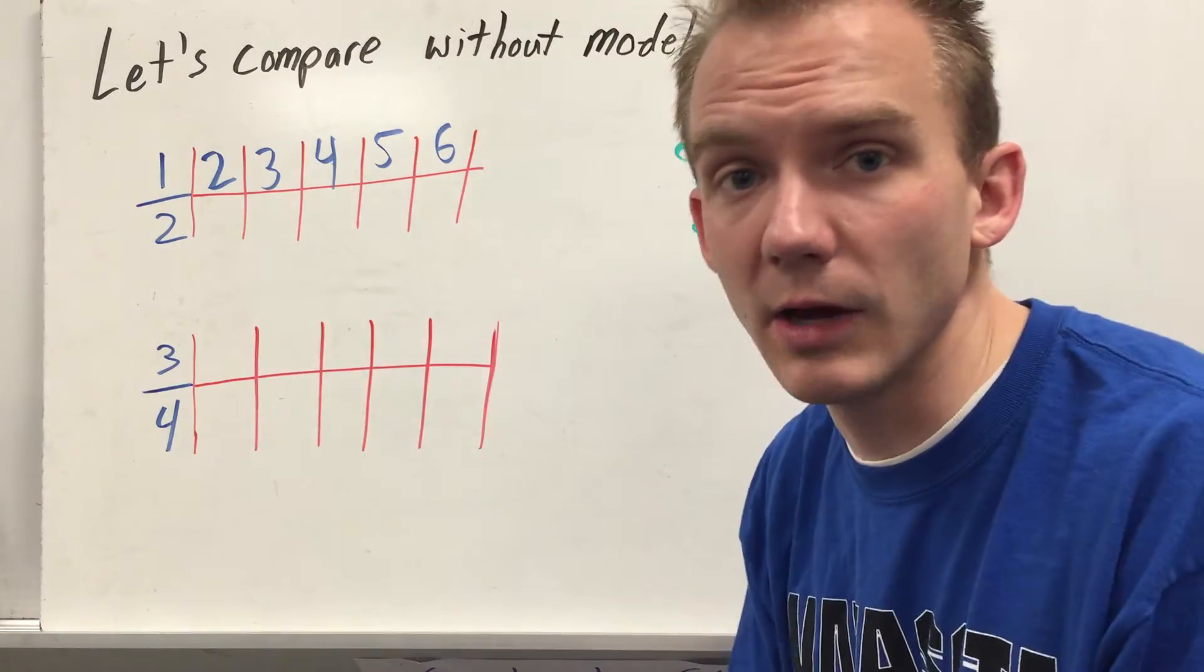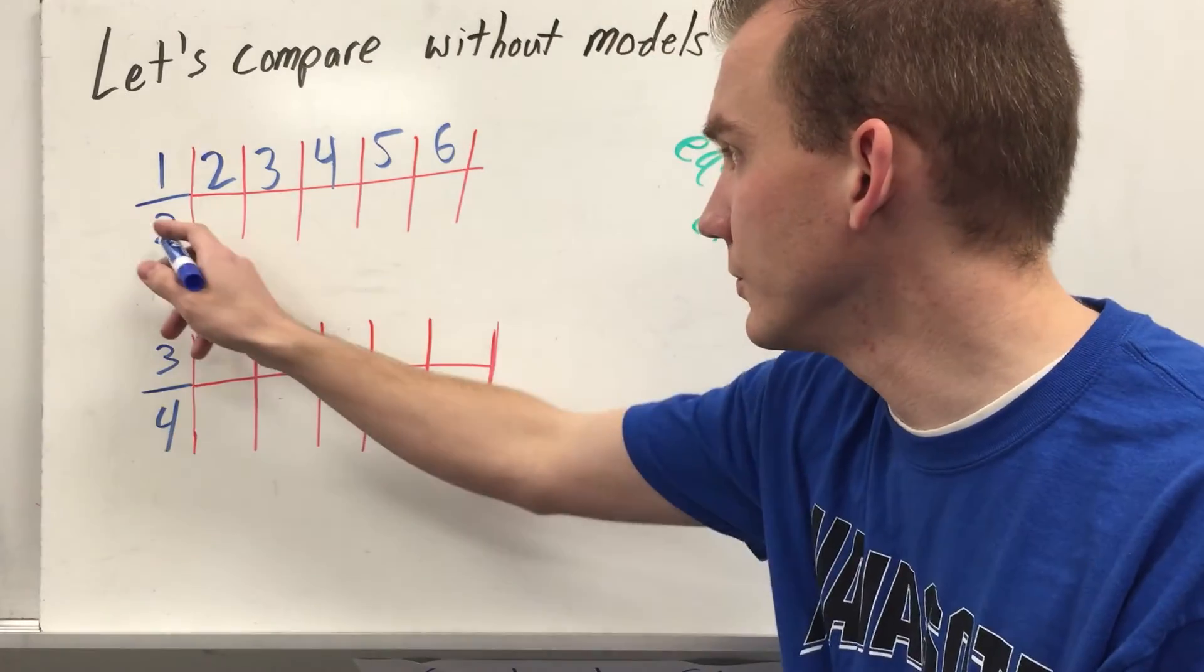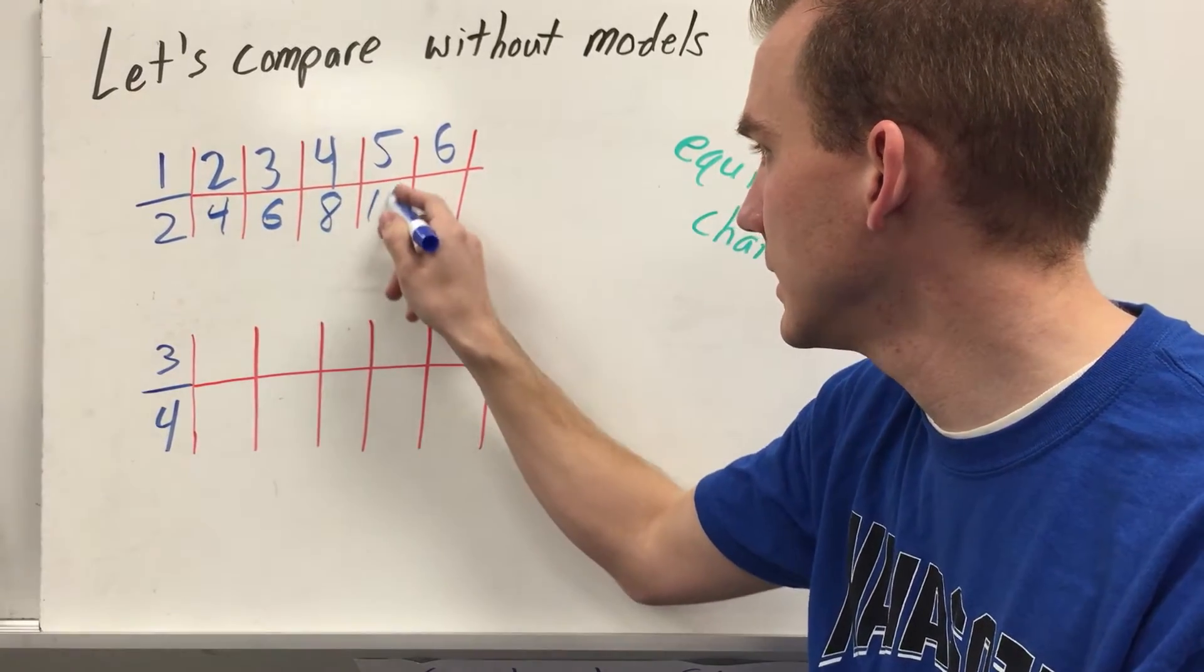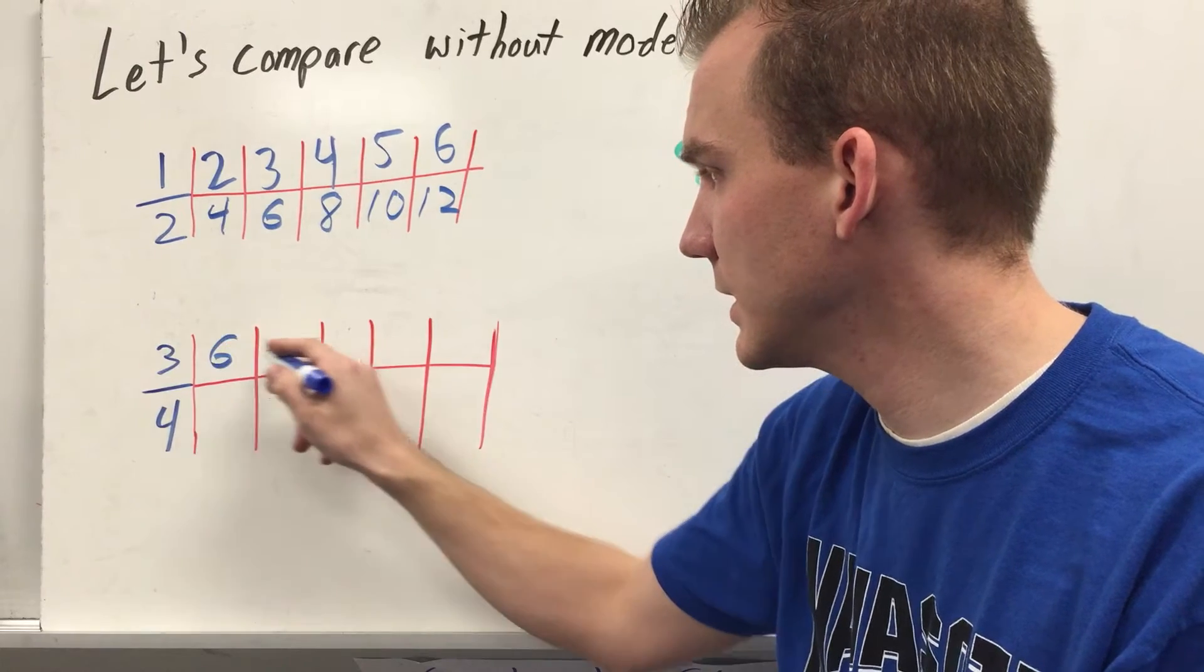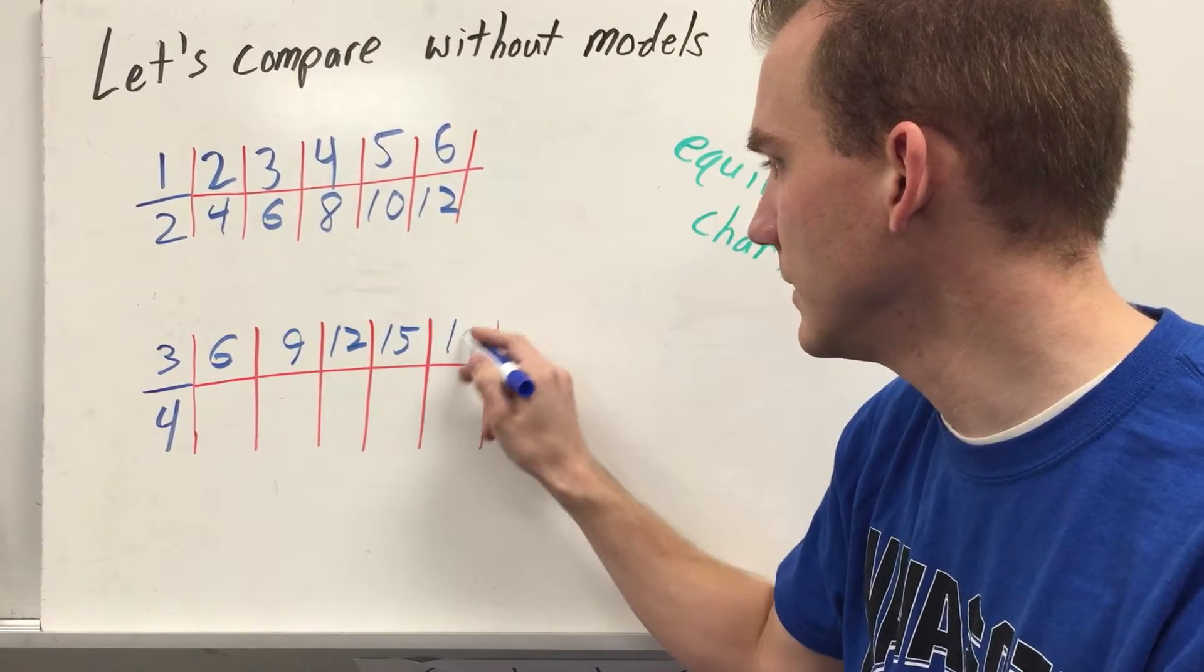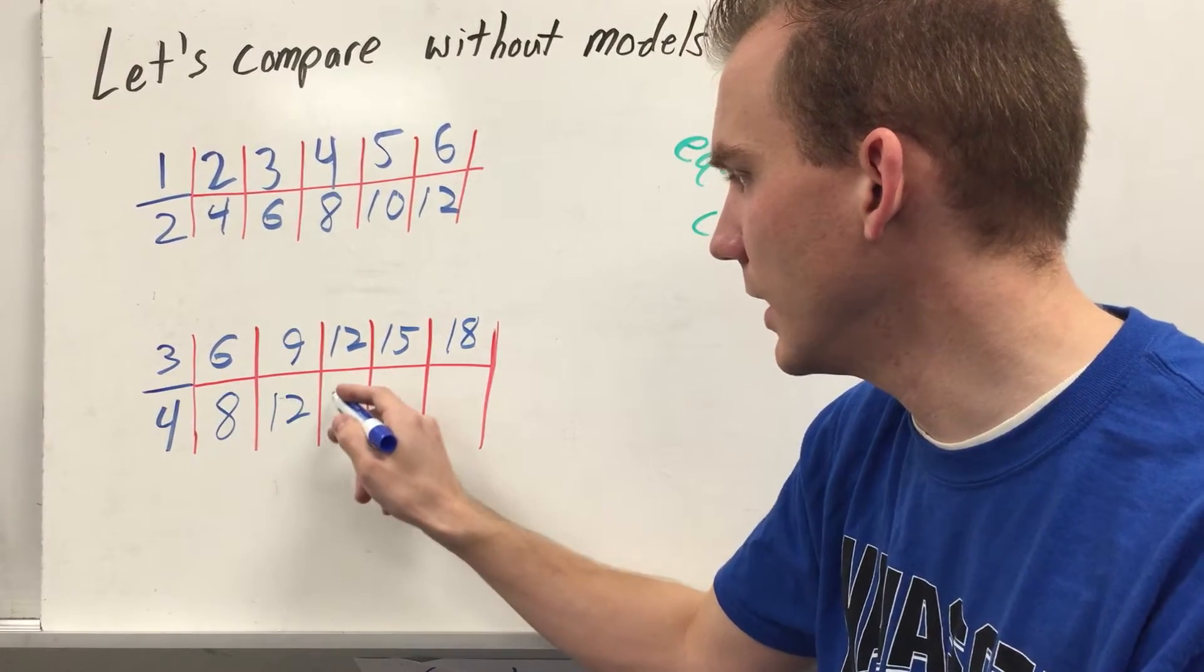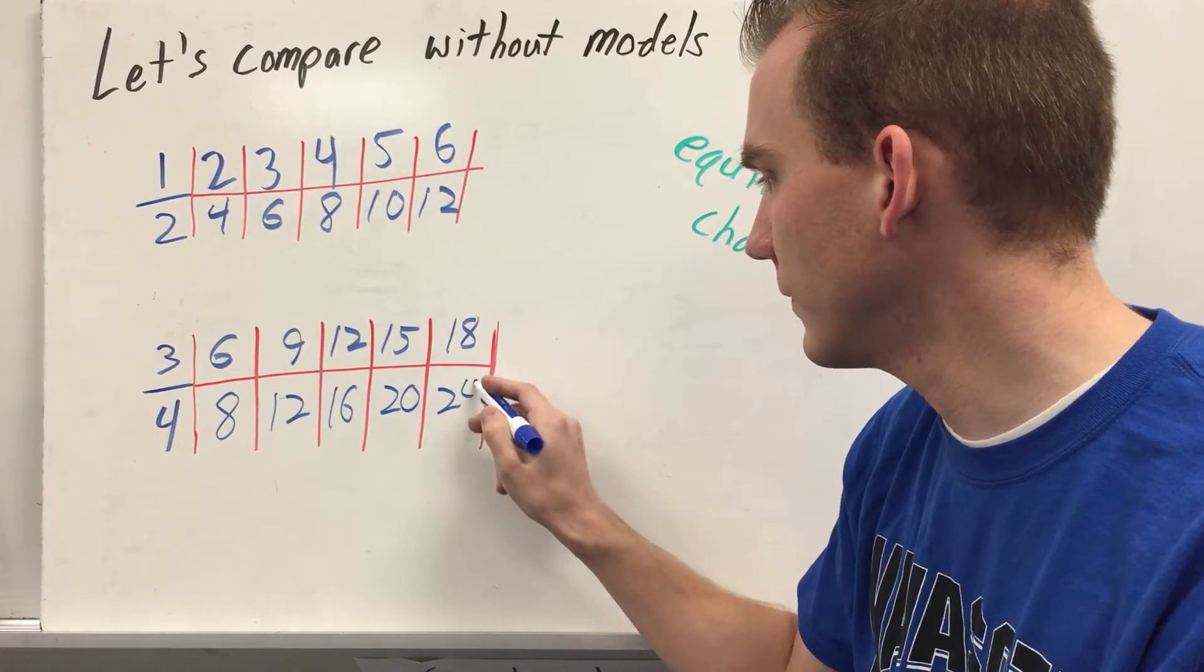So let's finish filling in these charts, counting by our numerators and denominators, thinking of our multiplication tables. 2, 2, 4, 6, 8, 10, 12, 3, 3, 6, 9, 12, 15, 18, 4, 4, 8, 12, 16, 20, 24.